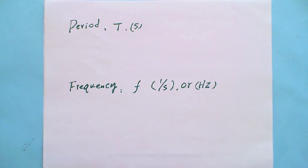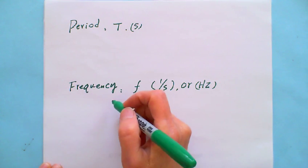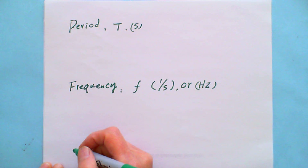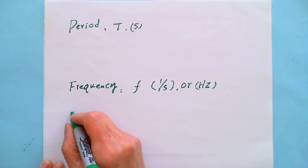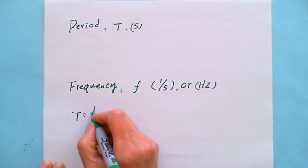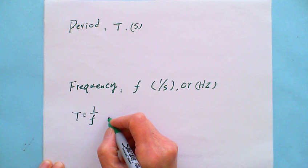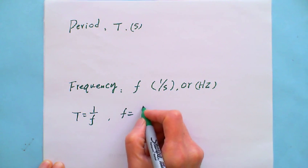So the relation between period and frequency, they are reciprocal. That means you can say T equals 1 over F, or F equals 1 over T.